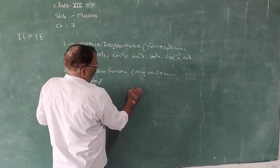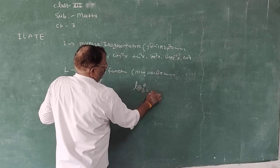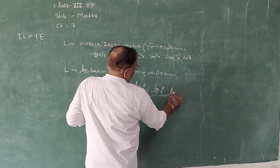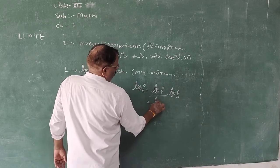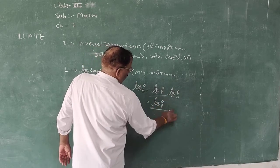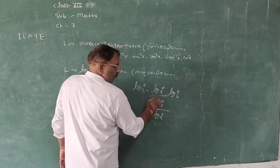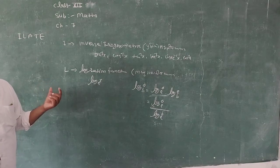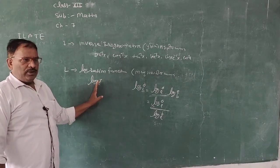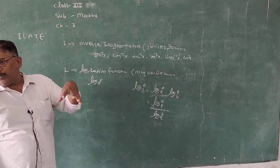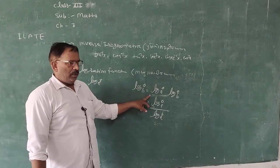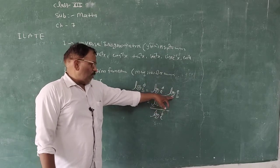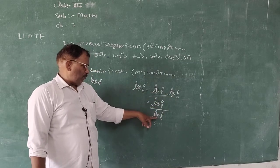If a base is given, we will change the base. For base change: log a base b can be written as log a base c multiplied by log e base b, or as log a base c upon log b base c. In differentiation and integration, the base of logarithm must be e. If no base is given, assume e; if another base is given, change it using this formula.